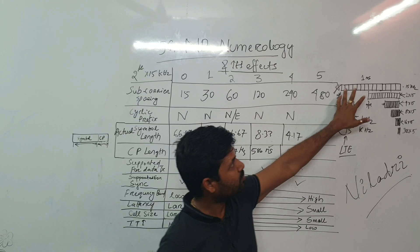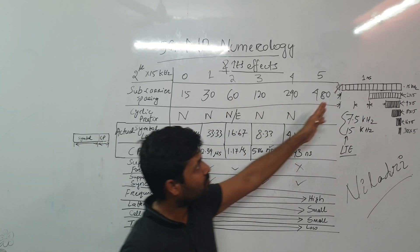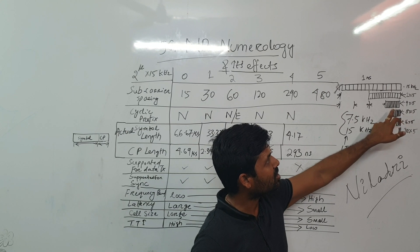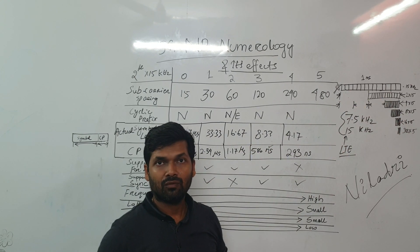So if we are transmitting same thing for 60 kilohertz, then for same 1 millisecond, we are able to transmit 4 into 14 symbols.